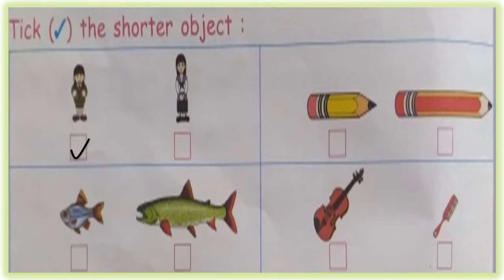The next one, there are two pencils. Which is the shortest pencil? The first or yellow pencil is shorter than the big pencil.